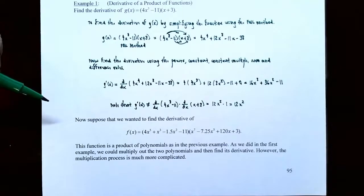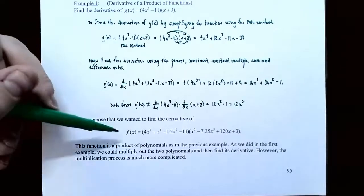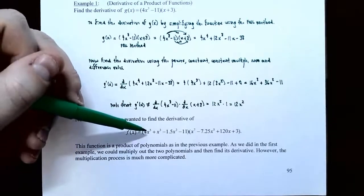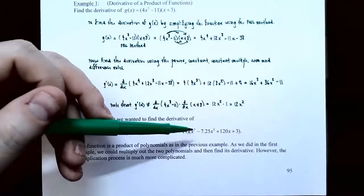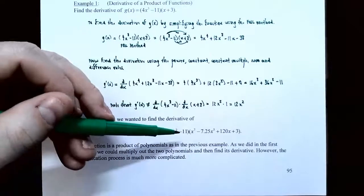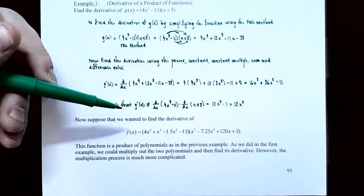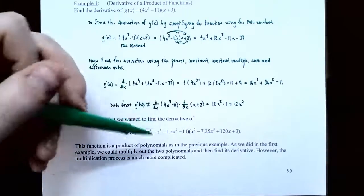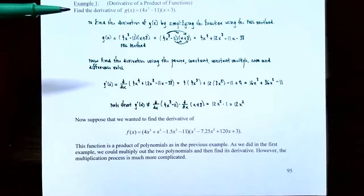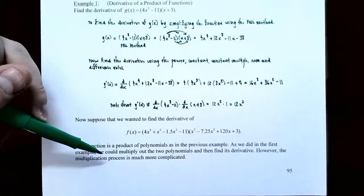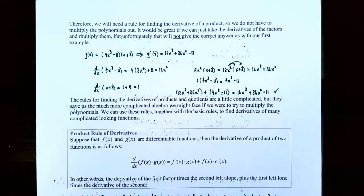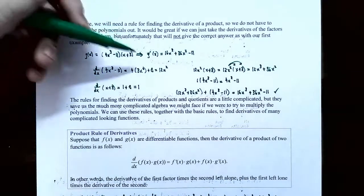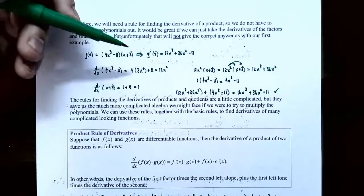In the previous example we could simplify first before differentiating. But suppose f(x) = (4x⁵ + x³ - 1.5x² - 11)(x⁷ - 7.25x⁵ + 120x + 3). Multiplying 4 terms by 4 terms requires 16 multiplications. It turns out there's a much quicker way to find the derivative of a product of two functions — a formula so we don't have to multiply out the polynomials first.